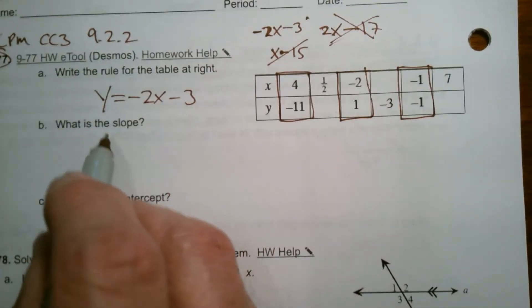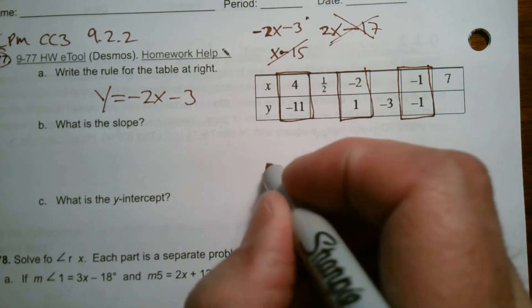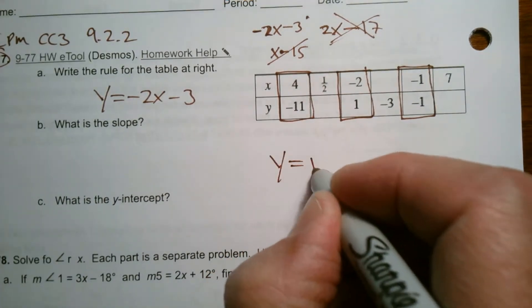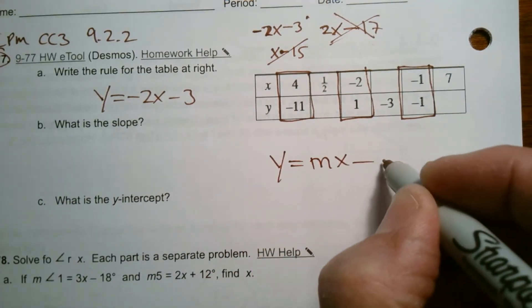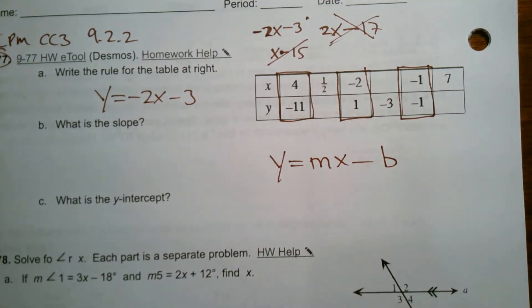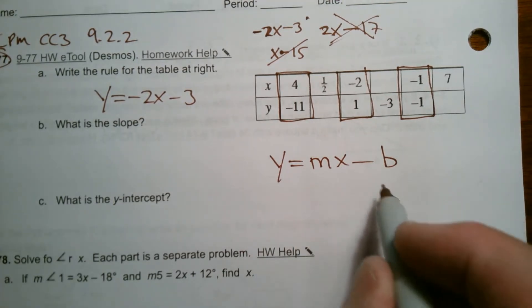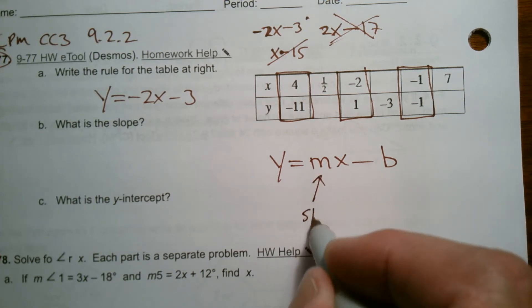So that being the rule, now I got to determine what's the slope and y-intercept. Well, don't forget the graphing form, the slope-intercept form, is y equals mx plus b, where m does represent your slope.